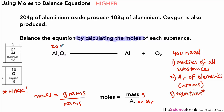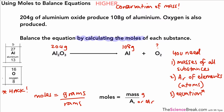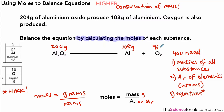For the first example, we have 204 grams of aluminium oxide and 108 grams of aluminium, but we don't know the mass of oxygen. Using conservation of mass, the mass of reactants equals the mass of products, so the oxygen mass is 108 minus 204... actually we do 204 minus 108, giving us 96 grams of oxygen.